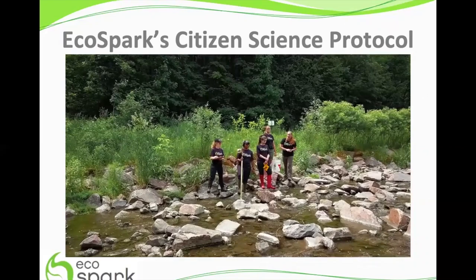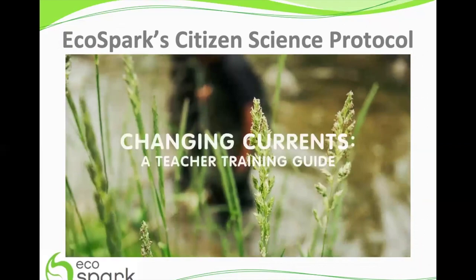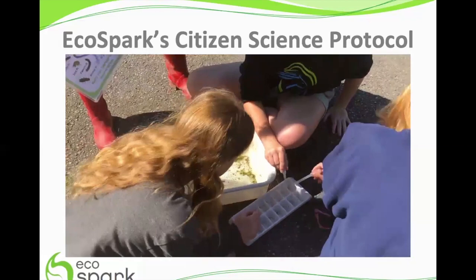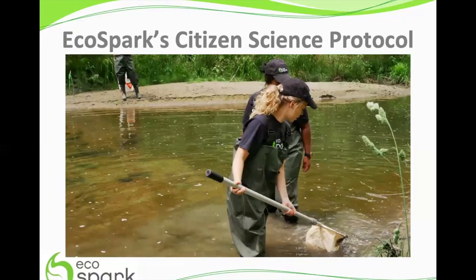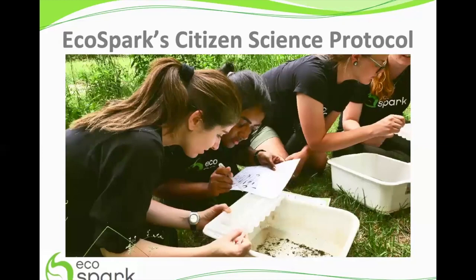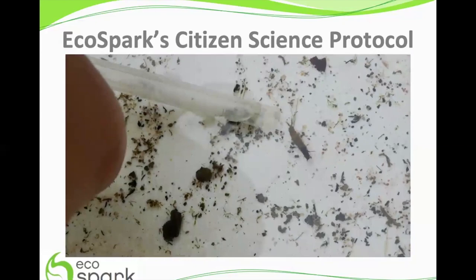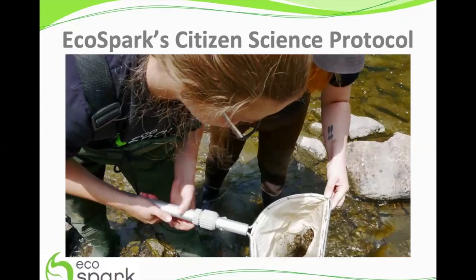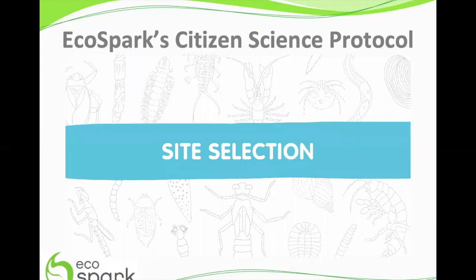EcoSpark is an organization that empowers people to take an active role in protecting and sustaining their local environment. In this teacher training video, we will review EcoSpark's Changing Currents water quality monitoring protocol on how to conduct a stream study. The Changing Currents program is a hands-on educational program that helps you and your students make the curriculum come to life through the exploration of your local river or stream. EcoSpark follows a scientific protocol to collect benthic macroinvertebrates — small aquatic bugs visible by the naked eye that lack a backbone — found at the bottom of the stream. These BMIs have different tolerance levels to pollution, and depending on the abundance and diversity found, we can gain a better understanding of how well the stream is doing. In this section, we will cover how to choose a site and map your transects for your stream study.